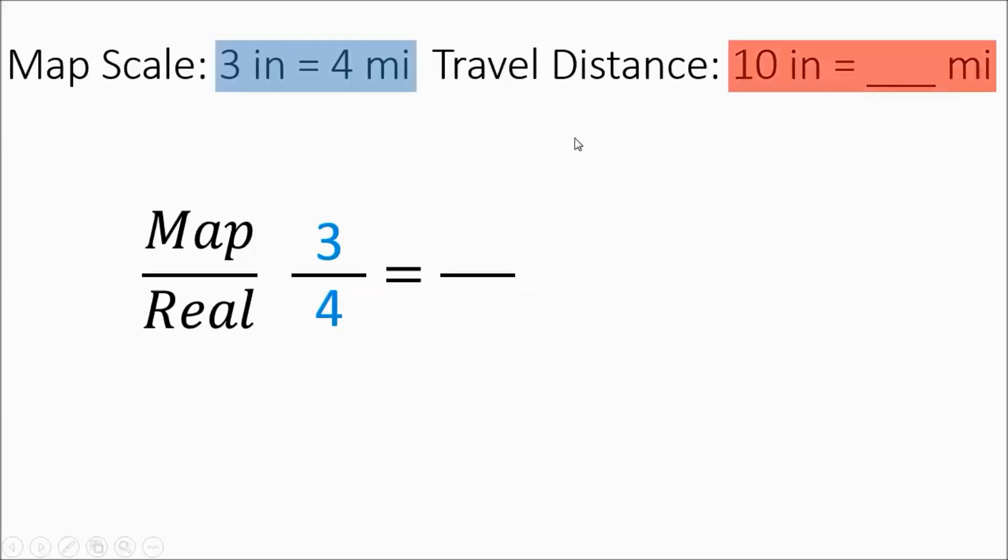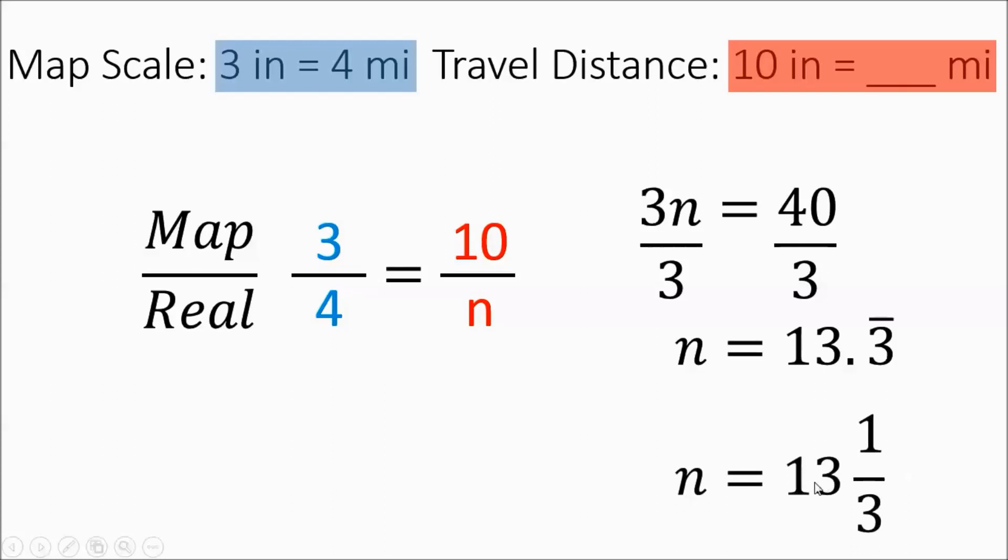So now we'll look over here at the travel distance. It's 10 inches equals how many miles. Since we're dealing with inches on the map, that's the number they give us, that's going to be the numerator and then to the mystery number. At this point, you could do your calculator trick to solve for n. Or you can set it up and do cross products. 3n equals 4 times 10, then divide out the 3. You're going to get 13.3 repeating, which is 13 and a third miles.